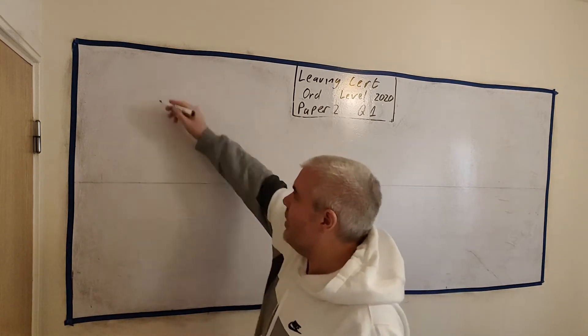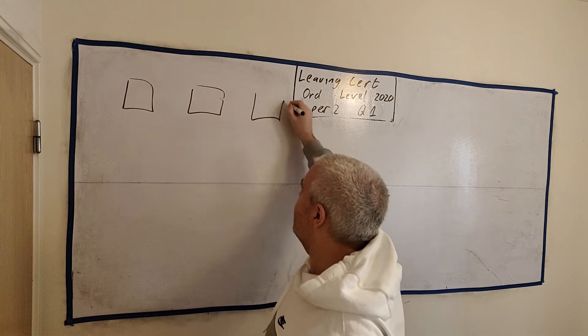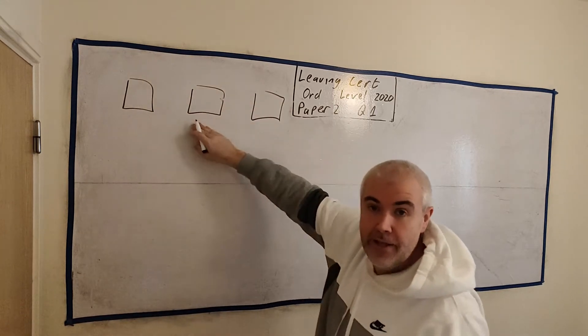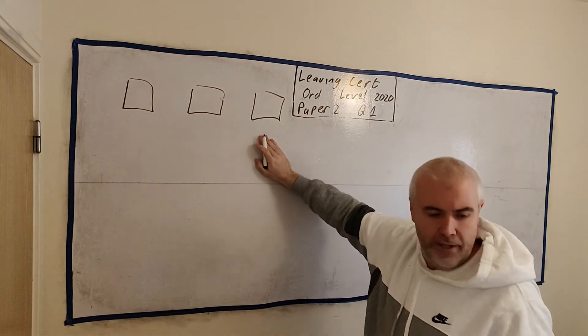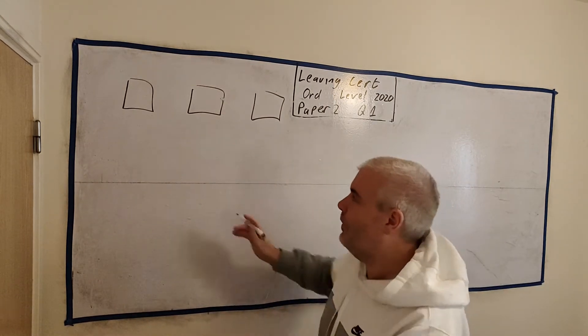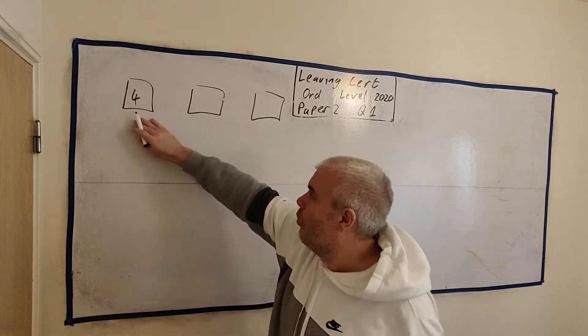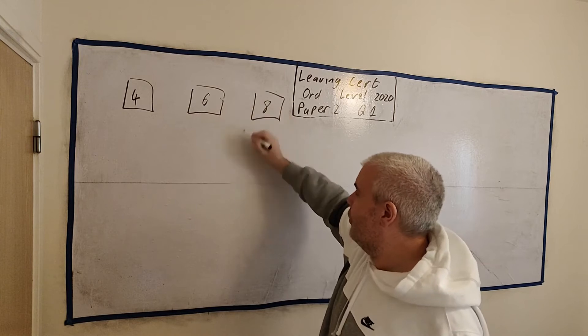Here's how I like to do these questions. I like to write a little box. This is for starters, for a main, and for a dessert. Now, the different options - I'll just put these numbers in for us. Four starters, six mains, and eight desserts.